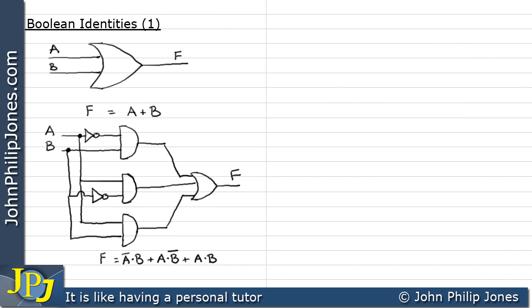Let's have a look at one example of an identity, and that is this one here. If I have F is not not A, then that's the same as saying F is A. Now, let's explain why this is the case.